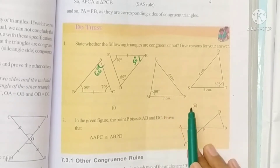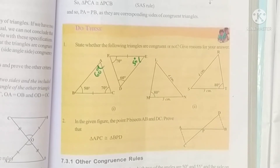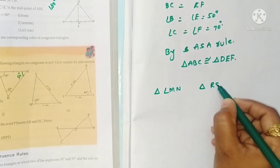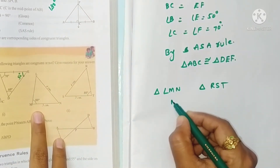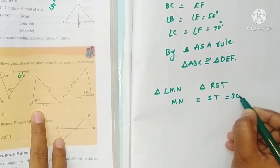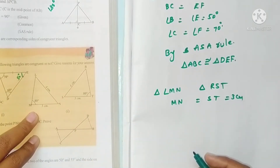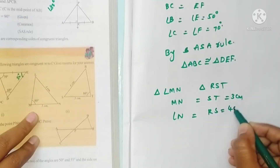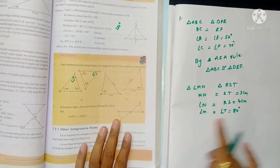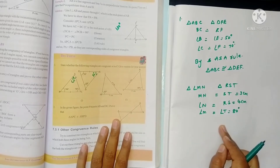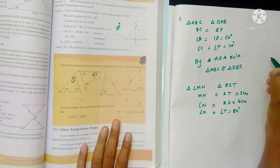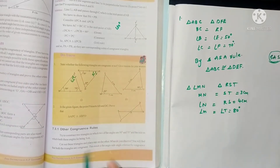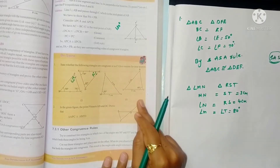Second one: triangle LMN and triangle RST. Here MN equals ST equals 3 centimeters, LN equals RS equals 4 centimeters, and angle M equals angle T equals 80 degrees. Now, if two sides and the included angle are equal we can use SAS, but here a non-included angle is given, so we cannot directly apply SAS.